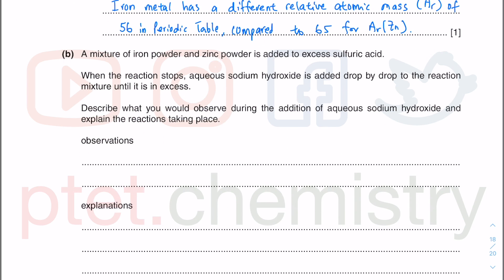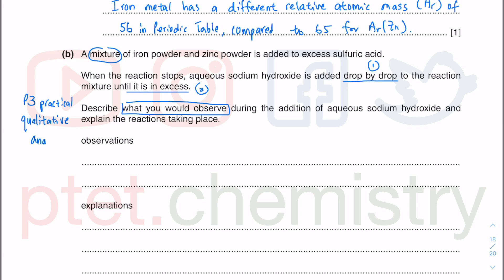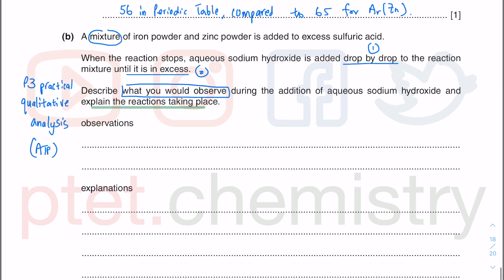Part B: you have a mixture of iron powder and zinc powder. When the reaction stops, you add sodium hydroxide drop by drop until the NaOH is in excess. Describe what you would observe — this is part of qualitative analysis, which could be in the practical paper or alternative-to-practical or even a structured theory paper. How many marks? 4 marks — 2 for observations and 2 for explanations. The observations include what happens with a little bit added and what happens in excess.